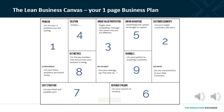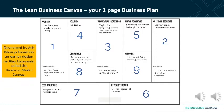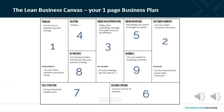The Lean Business Canvas is a one-page business plan. It was developed by Ash Maurya based on a previous design by Alex Osterwalder, called the Business Model Canvas. The Lean Business Canvas is thought to be a little bit more suitable for startup or early stage businesses.